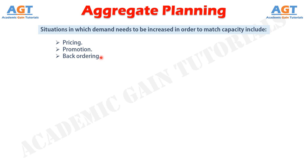Number 4, New Demand Creation — a new, but complementary demand is created for a product or service. When restaurant customers have to wait, they are frequently diverted into a complementary service — the bar. Other examples include the addition of video arcades within movie theaters and the expansion of services at convenience stores.